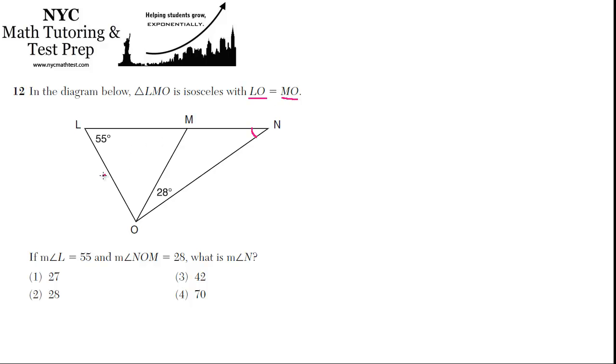So LO is this side, and MO is this side. If those two sides are equal, then their opposite angles must be equal. So if angle L equals 55, that corresponds to this side. Then angle M must also be 55 because that corresponds to this side.